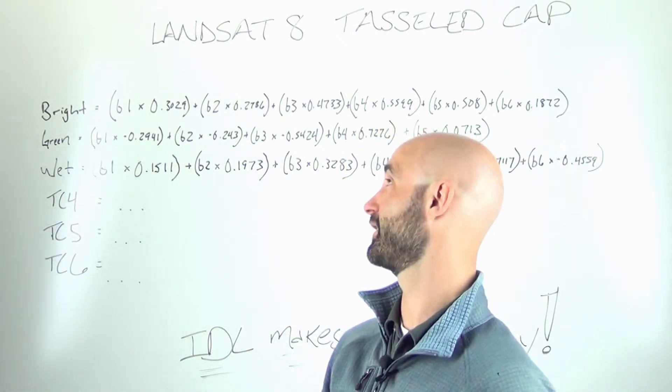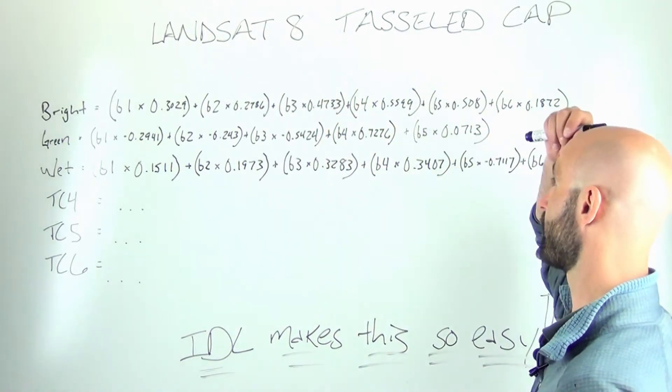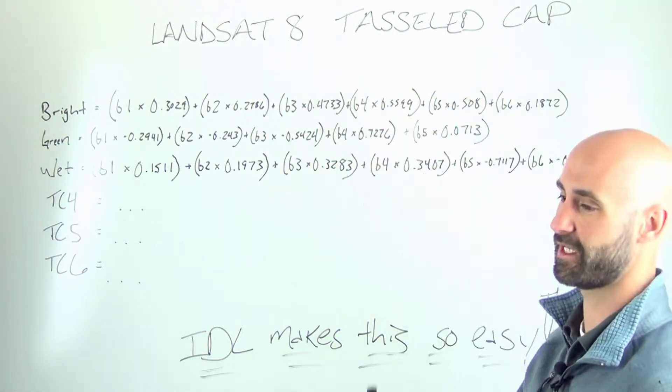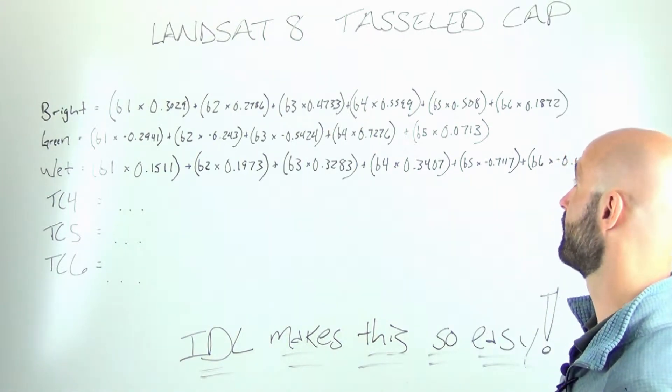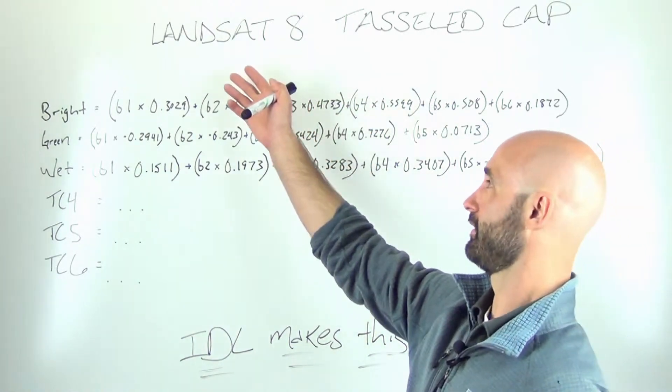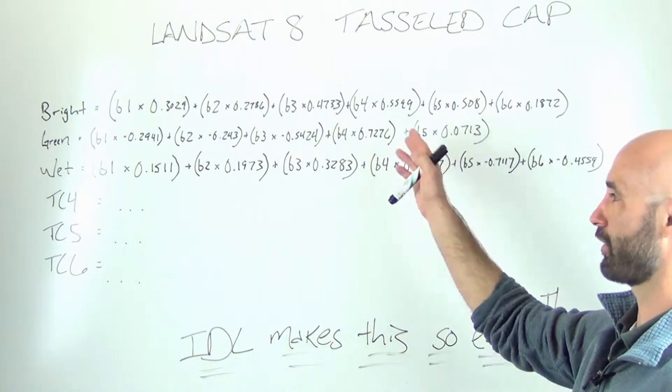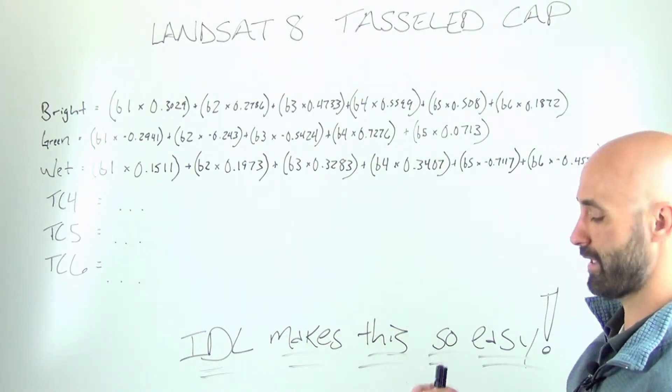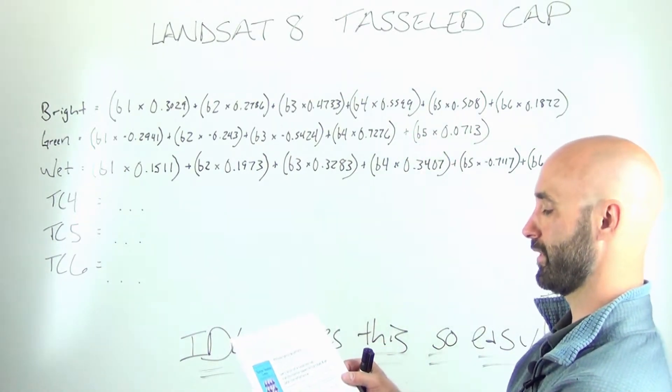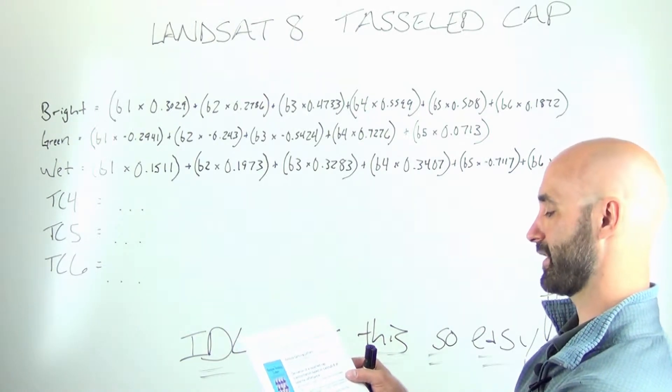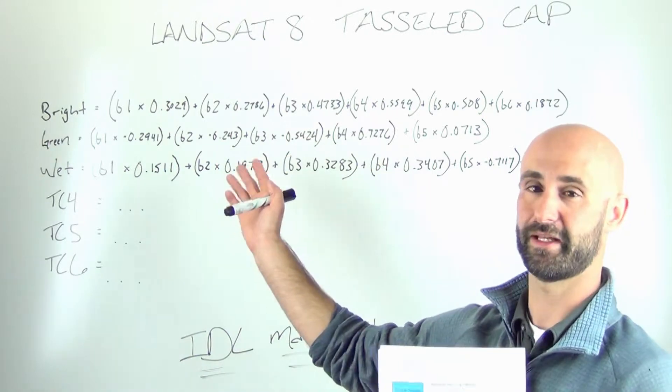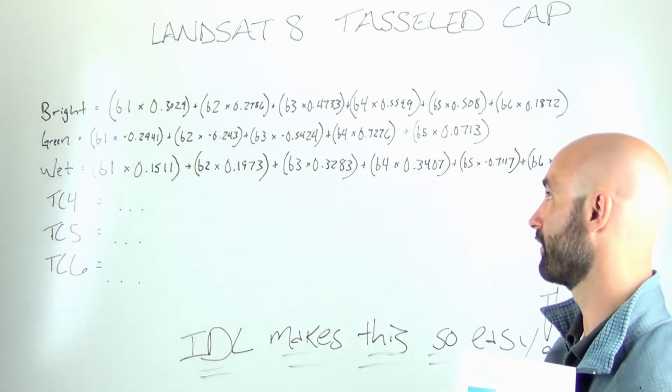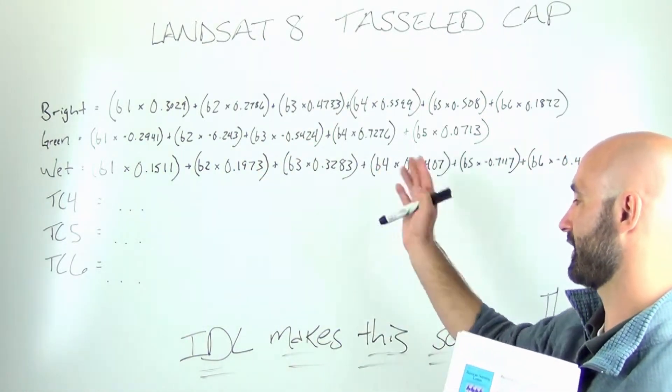One great example of that is the tasseled cap algorithm, which was originally designed for Landsat ETM and ETM Plus sensors. Landsat 8 is a new sensor. It has slightly different offset values, and this article that I printed out here was published by the Chinese Academy of Sciences. It basically defines the Landsat 8 tasseled cap algorithm for Landsat 8 data.